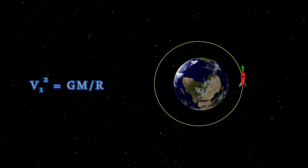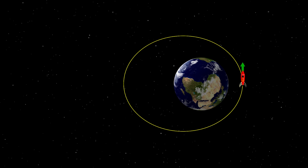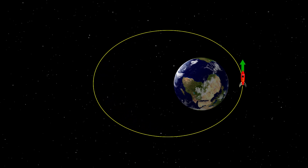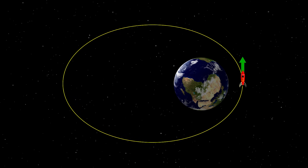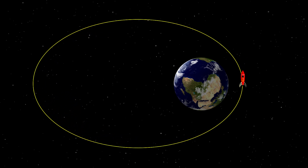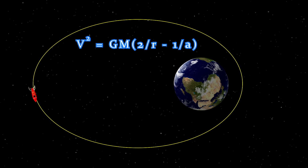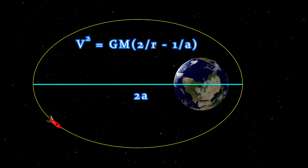If we start increasing the mechanical energy and angular momentum of the body — essentially accelerating it — the circle begins to stretch into an ellipse, becoming more elongated with increasing speed. The velocity of the body along the elliptical orbit at any given moment is described by a relationship where m is the mass of the gravitating object, g is the gravitational constant, r is the distance from our body to the gravitating object at the given moment, and a is the length of the major axis of the ellipse. At perigee, where r is minimal, the velocity is maximal; at apogee, the object moves slowest.